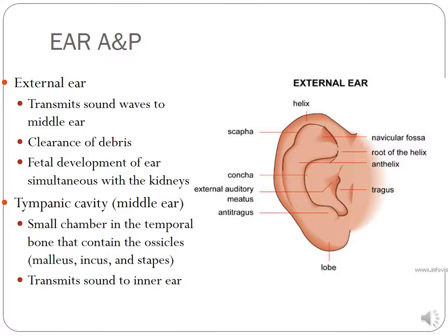Let's briefly review ear anatomy and physiology, mainly the external ear. Its purpose is to transmit sound waves to the middle ear, and the external auditory canal and cerumen help clear debris. Keep in mind that fetal development of the ear is simultaneous with the kidneys — that's why you sometimes see co-occurring renal anomalies. The tympanic membrane separates the external ear from the middle ear, and the small chamber in the temporal bones contains the ossicles: the malleus, incus, and stapes, which transmit sound waves to the inner ear.